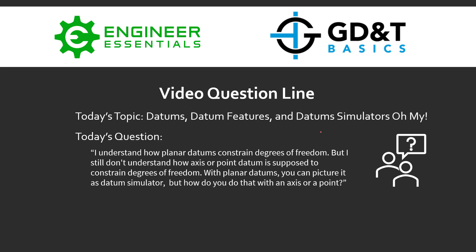Hey everybody, Jason here again with GD&T Basics in the Video Question Line. Today's topic is going to be about datums, datum features, and datum simulators. Today's question is: I understand how planar datums constrain degrees of freedom, but I still don't understand how axes or point datums are supposed to constrain degrees of freedom. With planar datums you can picture it as a datum simulator, but how do you do that with an axis or a point?